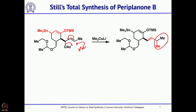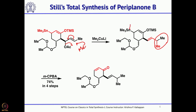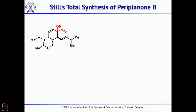He then had to generate the ketone. For that, he first treated with MCPBA — MCPBA forms the epoxide and then elimination takes place, giving the corresponding cyclohexenone. Once you have the cyclohexenone, you add the vinyl Grignard or vinyl lithium species. Addition of vinyl lithium gives the precursor for anionic oxy-Cope rearrangement, with the 3,3-arrangement nicely positioned.